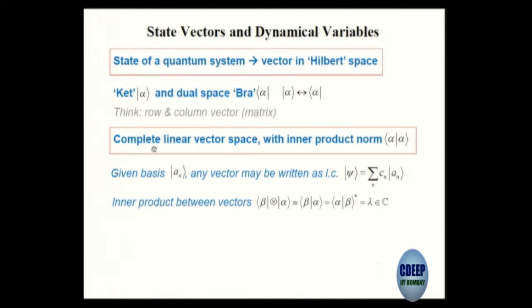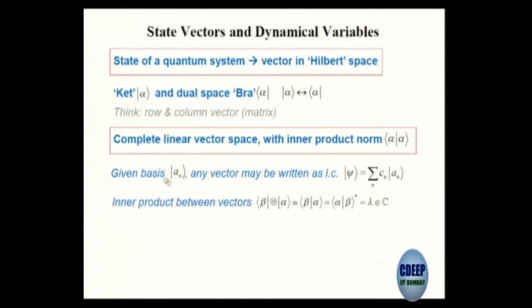Finally, this is a complete space. Complete means that given a set of basis vectors — in 3D space, i, j, k — you can write any vector as a linear combination of i, j, k, like a·i plus b·j plus c·k. The notation I am using is that these are my basis vectors. Think of these as i, j, k — n can be 1, 2, 3, 4, 5, 6, whatever. I am producing linear combinations where these c's are constants: c1 times a1 plus c2 times a2 — this is my linear combination. Any vector can be written as a linear combination of the basis vectors.